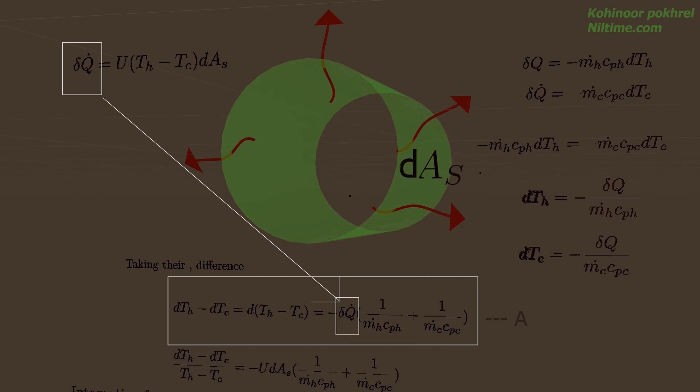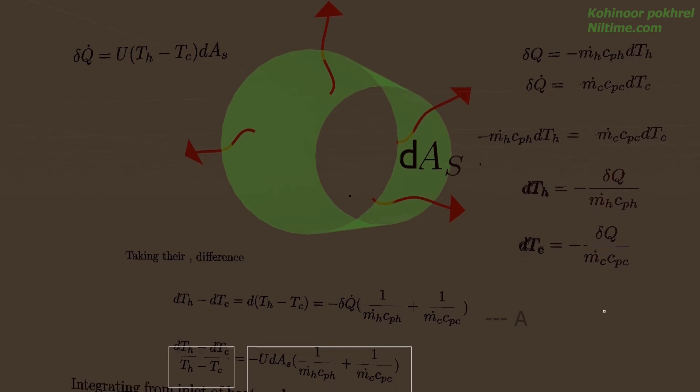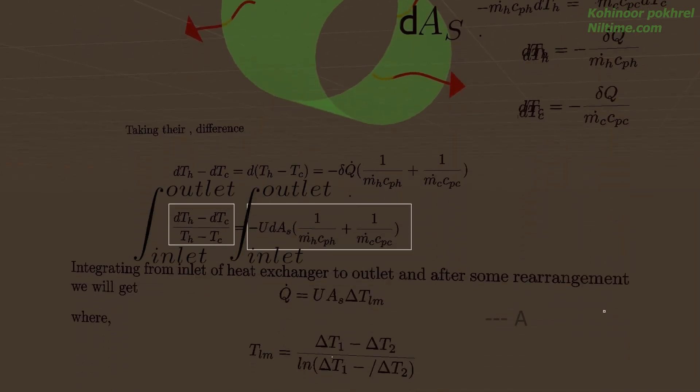Substituting on equation A and rearranging, and integrating this equation from inlet of heat exchanger to its outlet will provide the final equation.